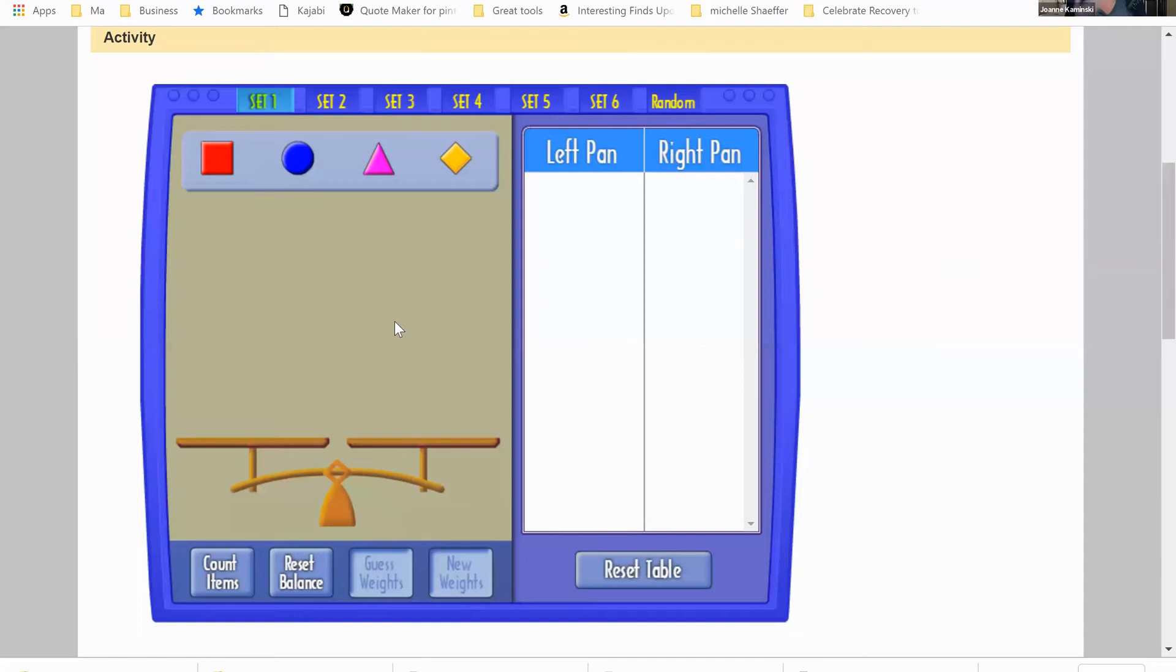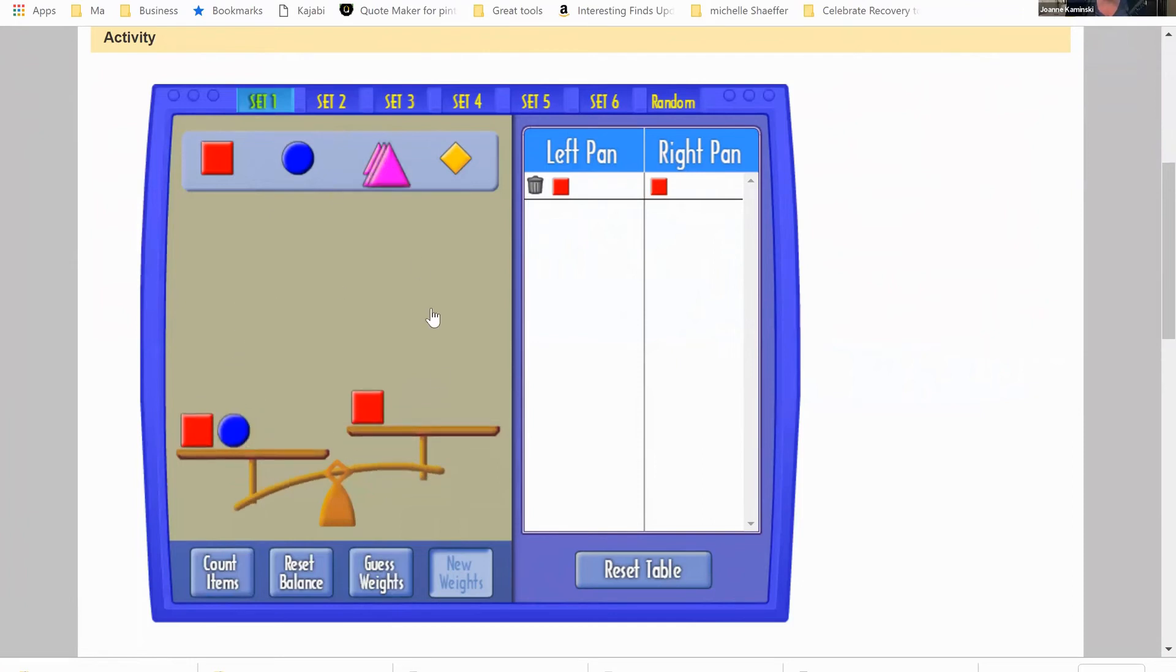This is a pan balance activity where kids are determining what equals what. If I put one square over here and I put a square over here, we can see that they are equal. One red square equals one red square. But as soon as I put a blue circle and a triangle over here, we can see clearly the triangle weighs more than the circle. But as soon as I add a triangle onto this side and I add a circle onto this side, I can equal it out again.